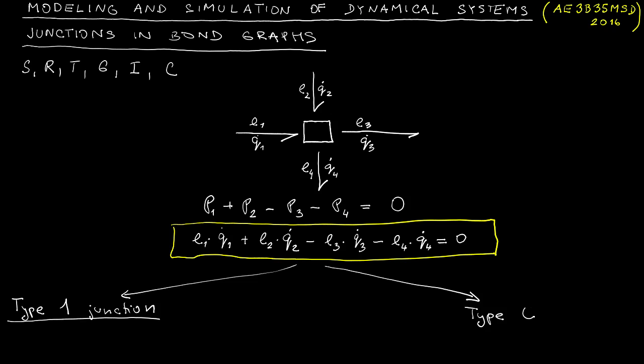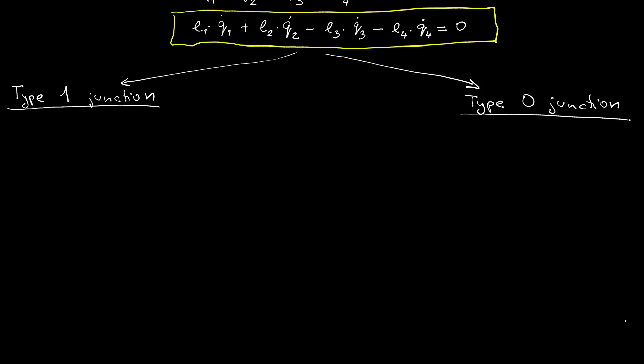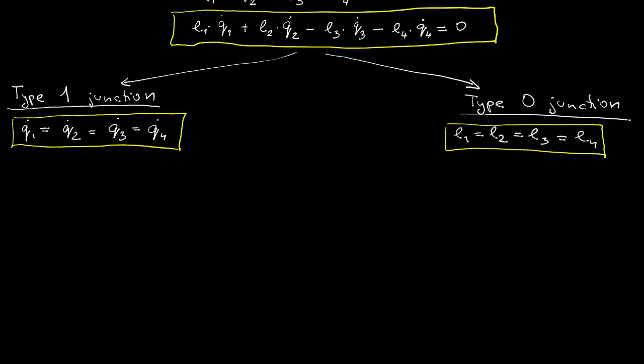The definition of the type 1 junction is that the generalized velocities on all the bonds are identical. Similarly, for type 0 junction it's the efforts on all the bonds that are identical. The graphical symbols for type 1 junction is obviously figure 1, whereas graphical symbol for type 0 junction is obviously the figure 0.